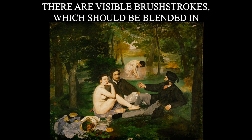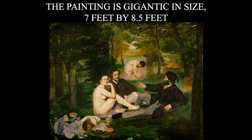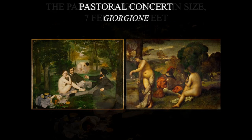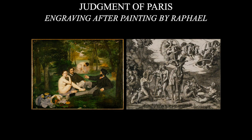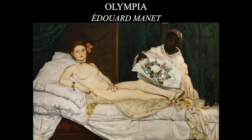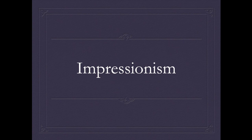The painting has visible brush strokes and is the size of a history, religious, or mythological painting — about seven by eight feet — when this subject matter would normally be painted around one and a half by two feet. It is based on traditional Renaissance works such as 'Pastoral Concert' and 'The Judgment of Paris,' so Manet consulted the past but used very contemporary figures. His painting 'Olympia,' depicting a prostitute, similarly lacks chiaroscuro and linear perspective and is based on images from the past.